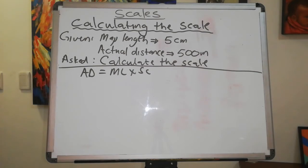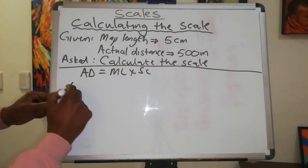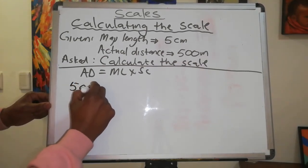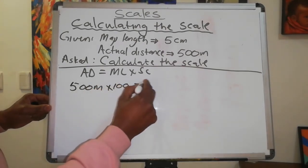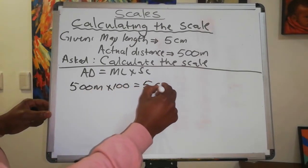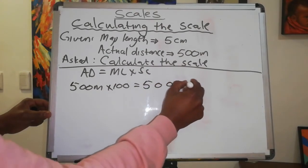Now, when you calculate your scales, your scales are usually either in millimeters or in centimeters. In this case, the smallest unit that we are working with is centimeters. Therefore, 500 meters must be converted to centimeters, and that's going to give 50,000 centimeters.